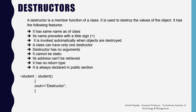A destructor is a member function of a class used to destroy the values of objects that are not being referenced. Its name is the same as the class name preceded with the tilde (~) sign, found before the number 1 key. It is invoked automatically when objects are being destroyed. A class can only have one destructor. Destructors have no arguments, cannot be static, their address cannot be retrieved, they have no return value, and they are always declared in the public section. For example, the destructor for the Student class is written as ~Student() with no arguments.